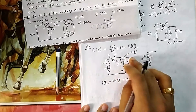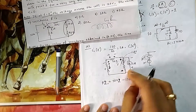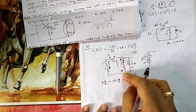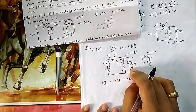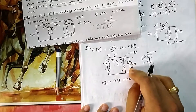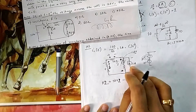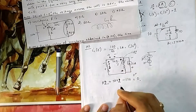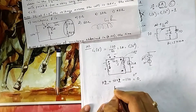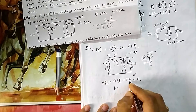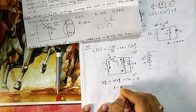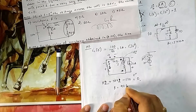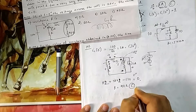Solving the KVL equation: R×2 + 20×2 = 120, so 2R = 120 − 40 = 80, giving R = 40Ω. That is option C.